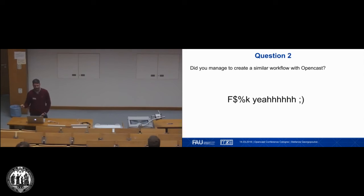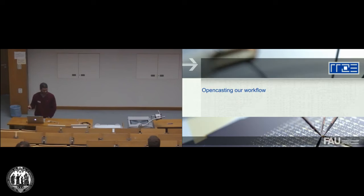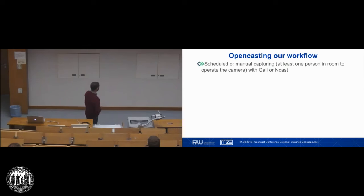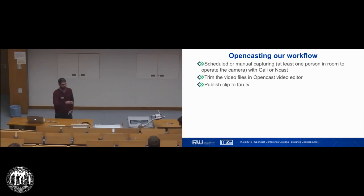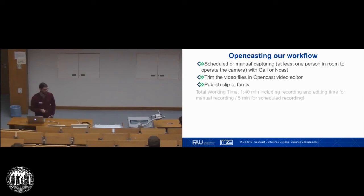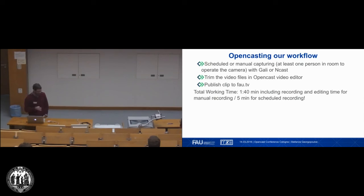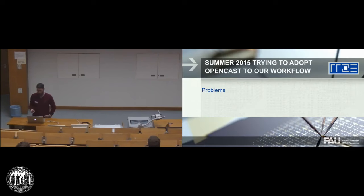So, Opencast is doing many complicated things for us automatically. We go to the room, schedule, trim, and we're done. No Final Cut Pro, no export steps — Opencast does it all automatically. Total working time is around 90 minutes. For a scheduled recording, we only need five minutes just for trimming.